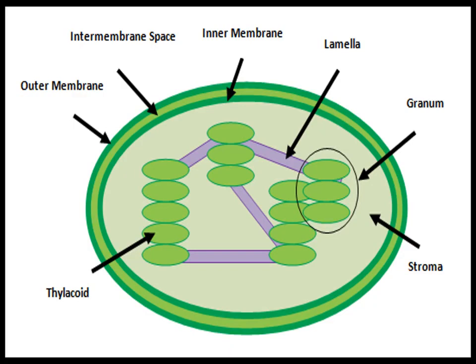In the structure of chloroplasts, there is an outer membrane and an inner membrane, with an intermembrane space in between. Inside the inner membrane is a fluid called the stroma. Within the stroma, many thylakoids are present — these are sac-like, membrane-bounded structures. Thylakoids are stacked over each other, and this complete stacked structure is called a granum.